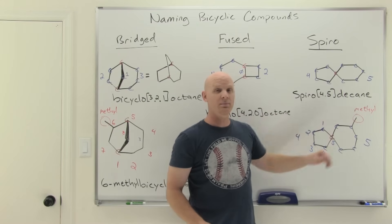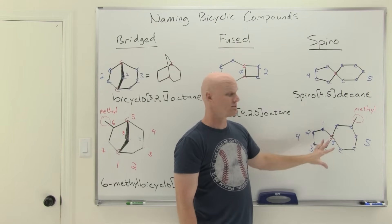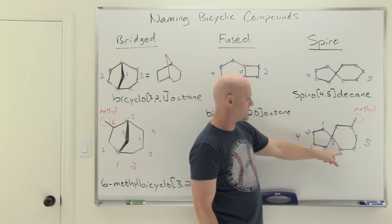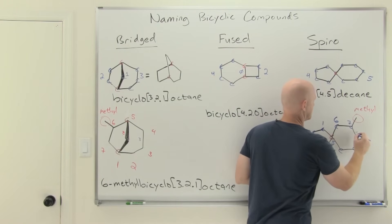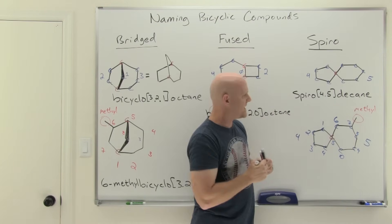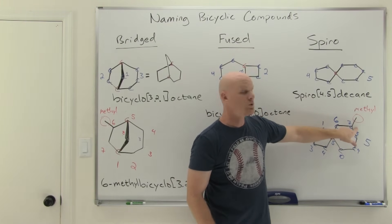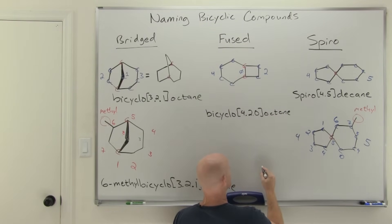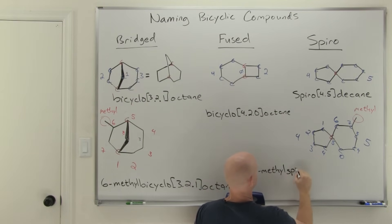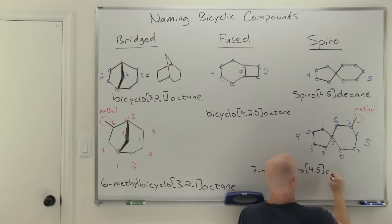By making that top carbon six, the methyl group ends up at position seven. Had we gone the other direction, it would have been nine-methyl, so seven-methyl is definitely superior. The full name is therefore 7-methylspiro[4.5]decane.